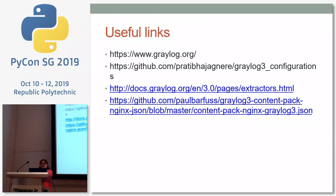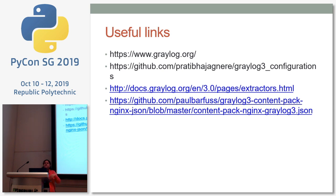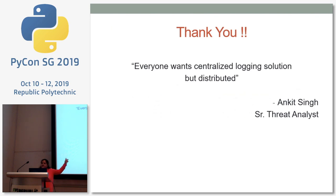Here are some useful links. One of the GitHub links is mine — it is the Graylog 3 configuration related to the Django server configuration I covered. The Nginx extractor is already written — you can check the Graylog marketplace. There are many extractors already available, and if you have a well-known application, chances are the extractor is already written for it. Instead of writing your own, you can check that first. Thank you.